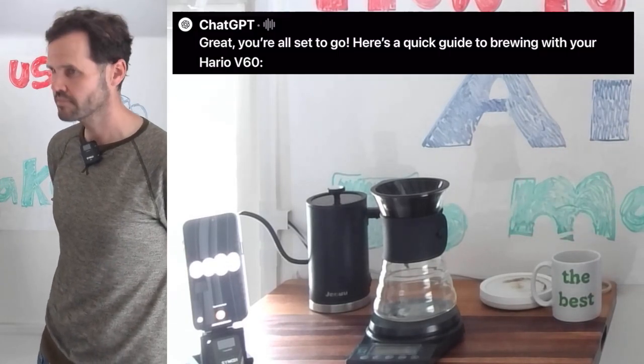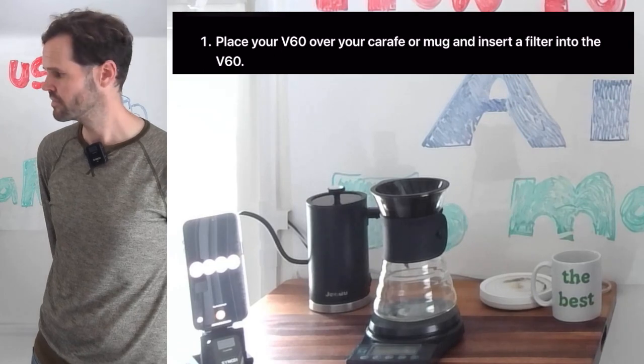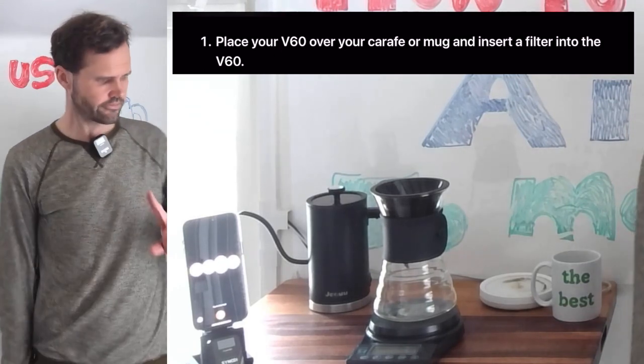Great. You're all set to go. Here's a quick guide to brewing with your Hario V60. One, place your V60 over your carafe or mug and insert a filter into the V60.